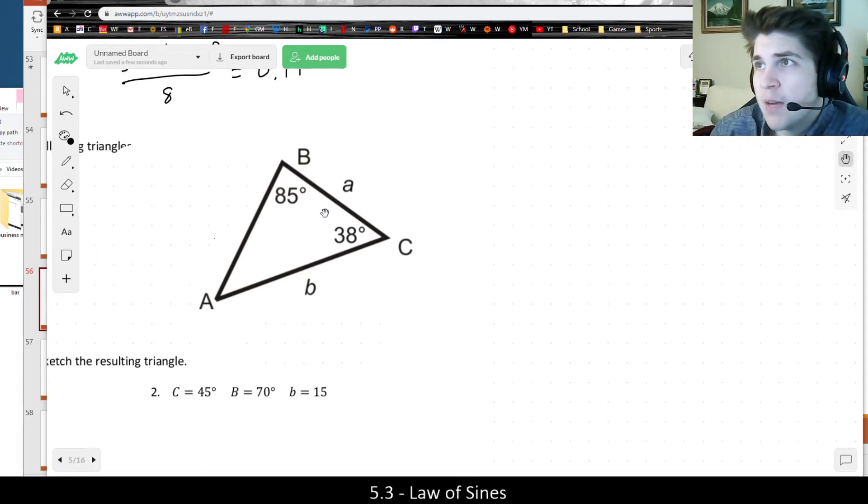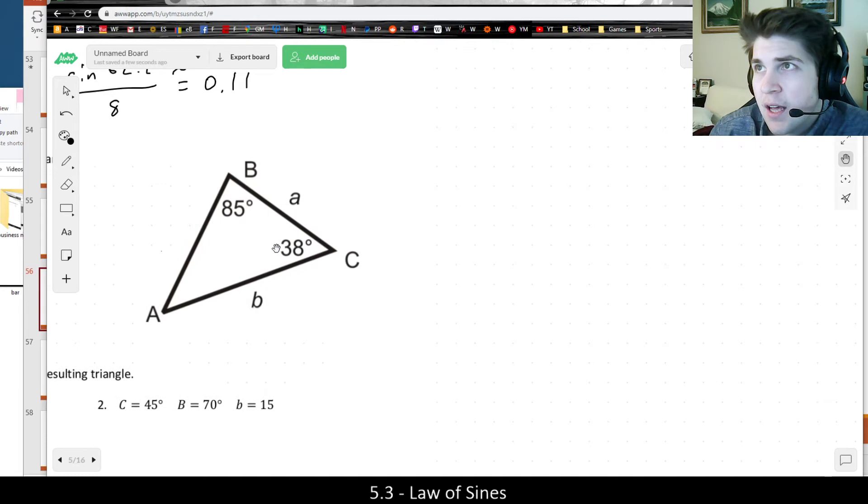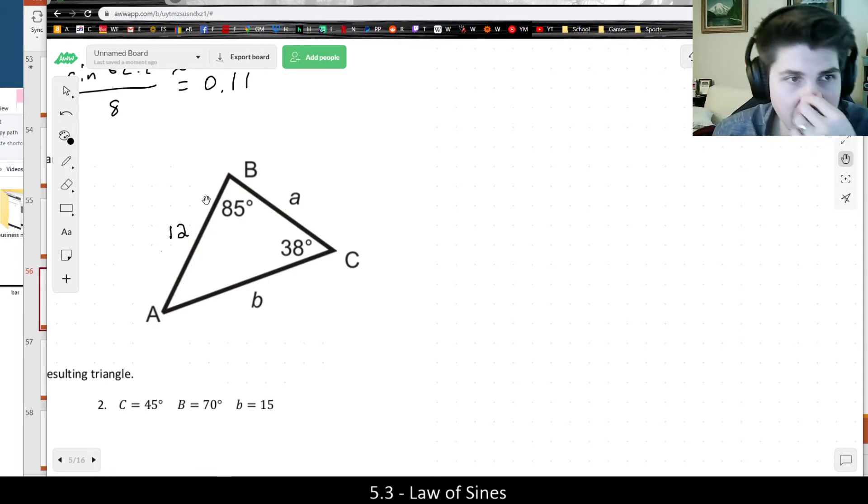Like in this triangle, we can think about what we're given. And actually, I accidentally erased a 12 here, but there was a 12. If we didn't have a side given, we would be up the creek without a paddle. We wouldn't be able to solve these.